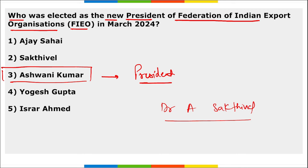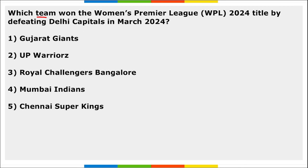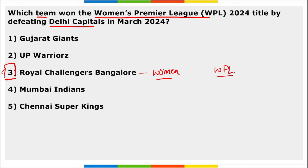Royal Challengers Bangalore's women's team won the Women's Premier League 2024 by defeating Delhi Capitals. This was the second edition of the WPL and marks RCB's first WPL victory. The captain of RCB women's team is Smriti Mandhana.